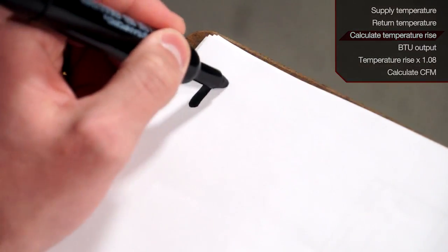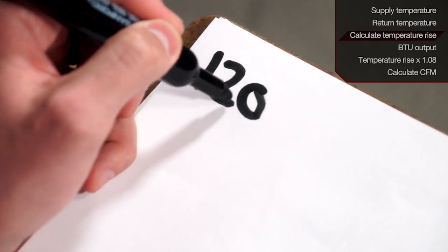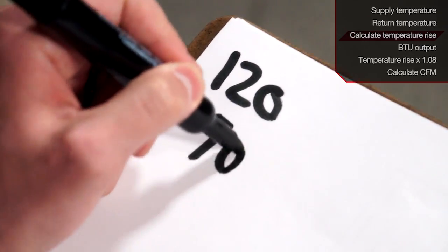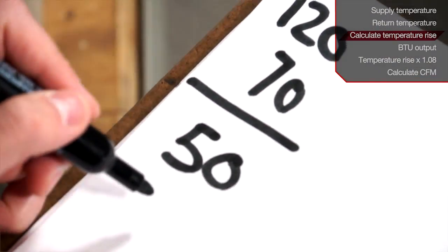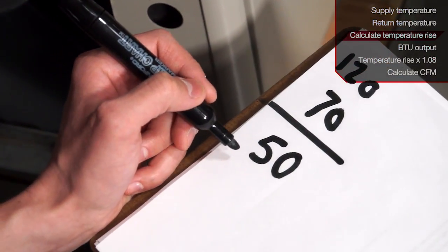In this example, our supply air temperature is 120 degrees. Our return air temperature is 70 degrees. You will then take the difference of these two numbers. 50 equals our temperature rise.